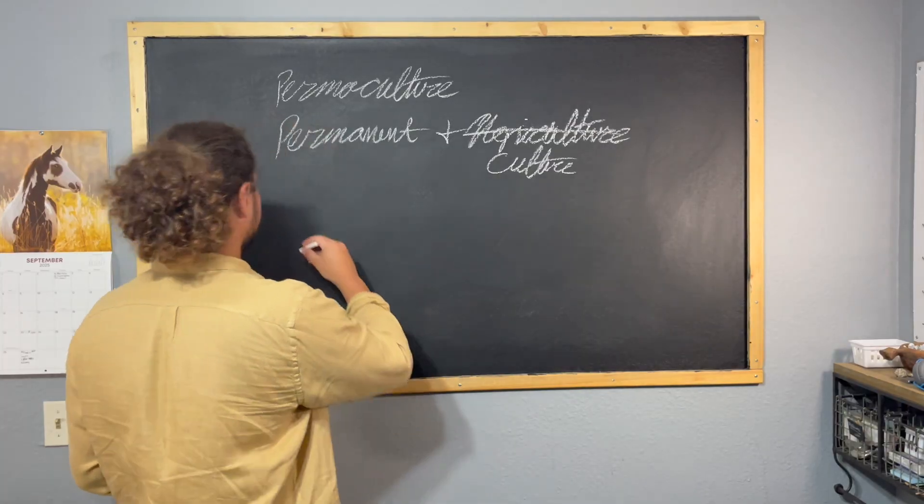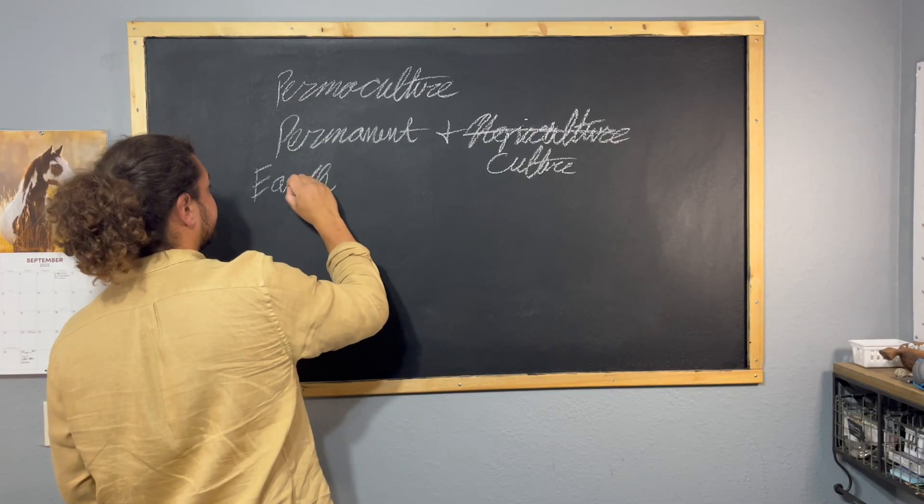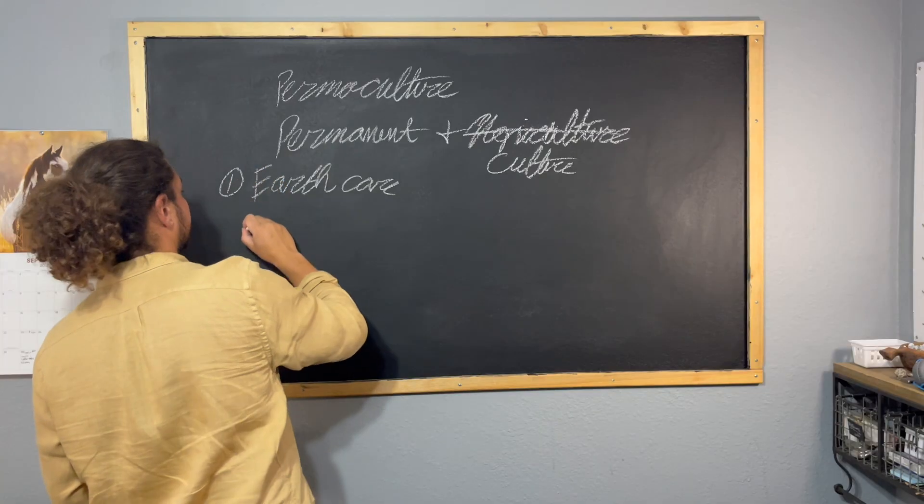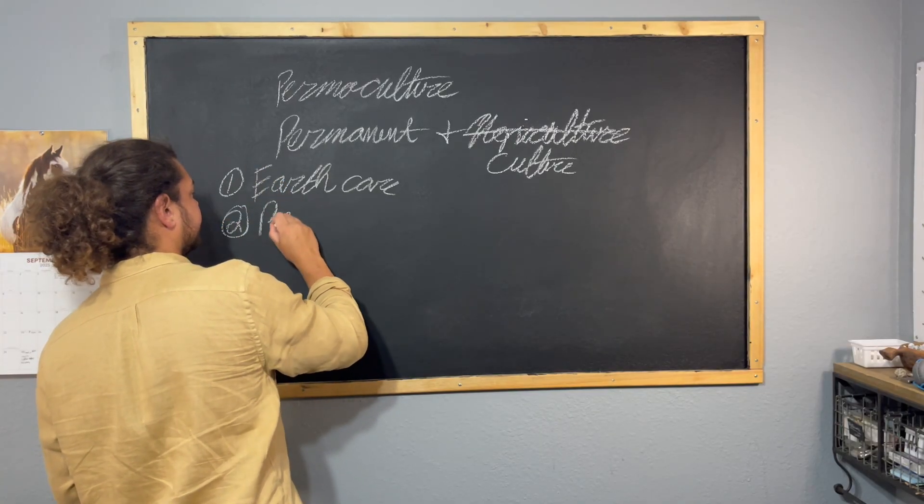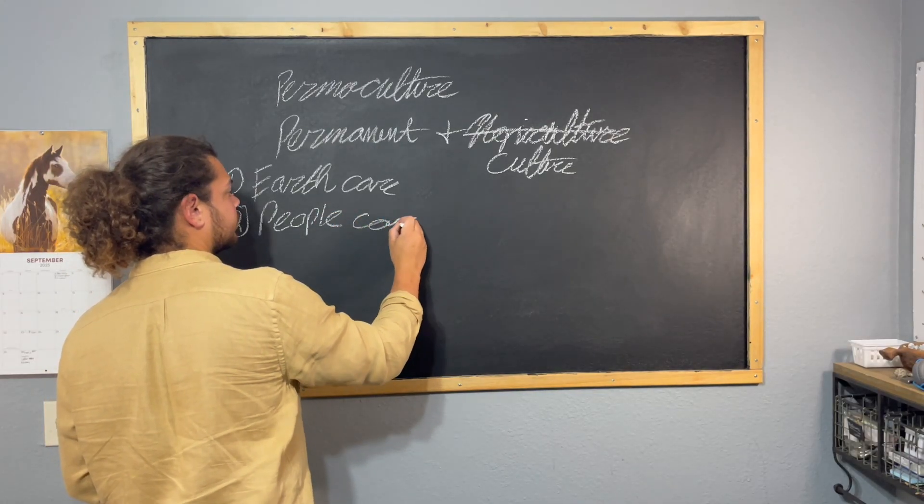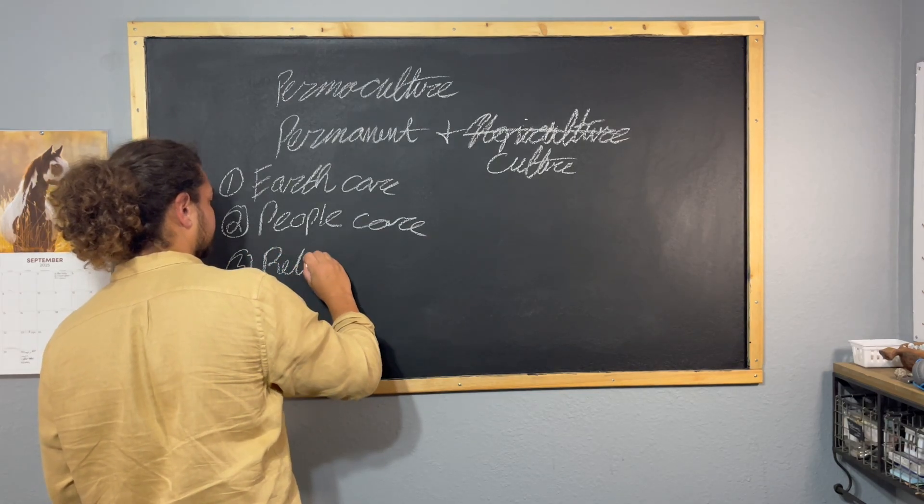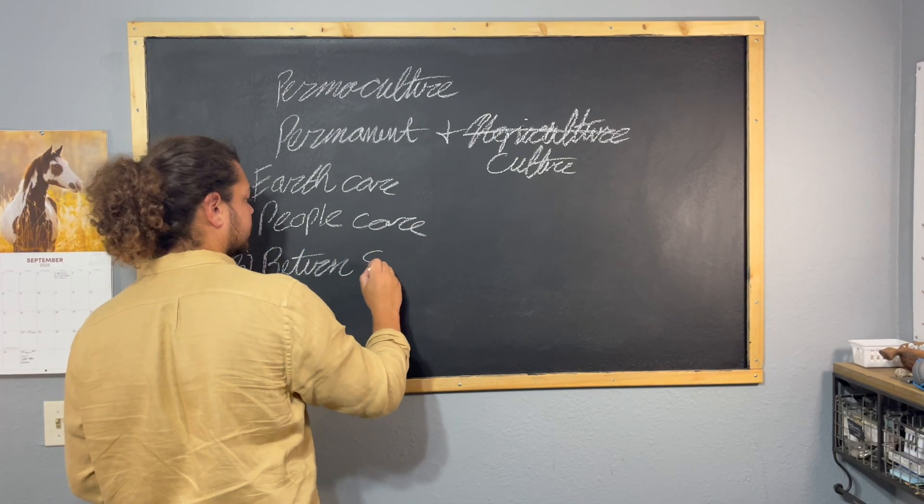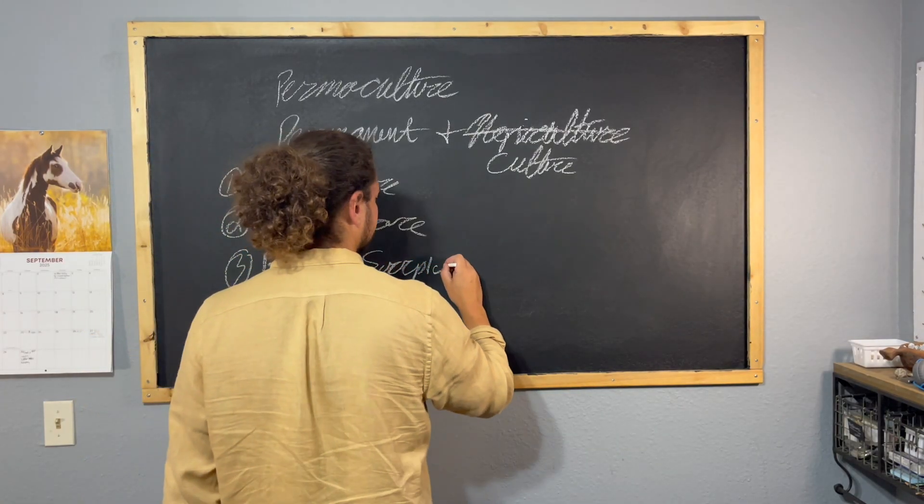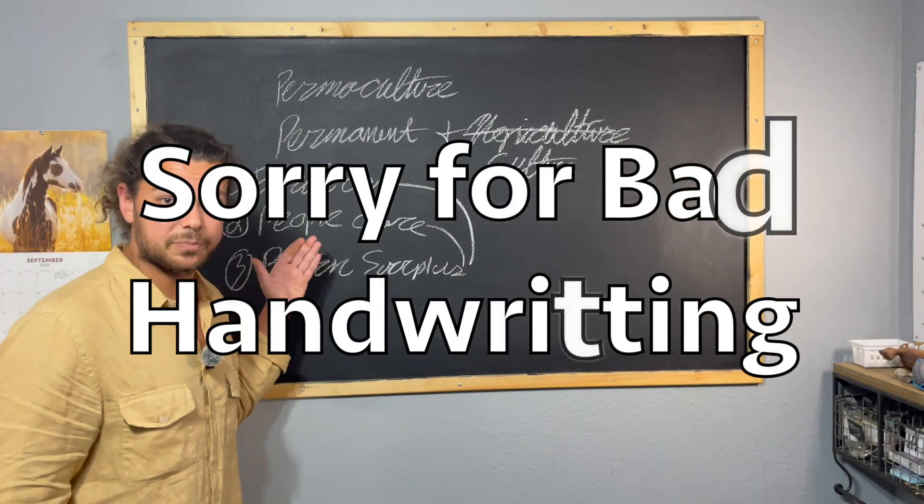So there's three ethics to permaculture. There's earth care, people care, and return surplus to the first two ethics. Those are the three ethics of permaculture.